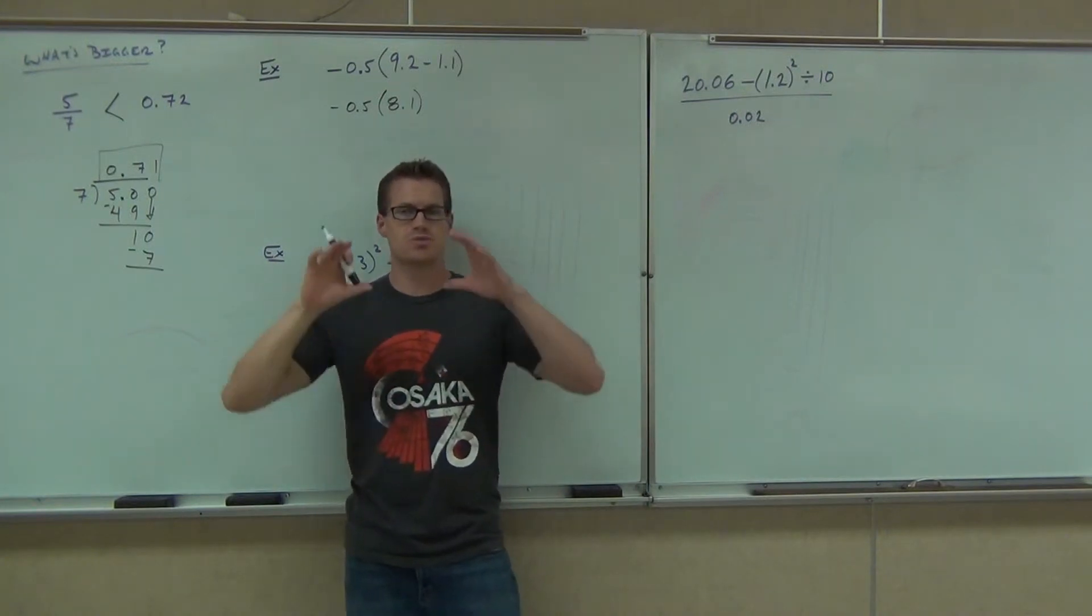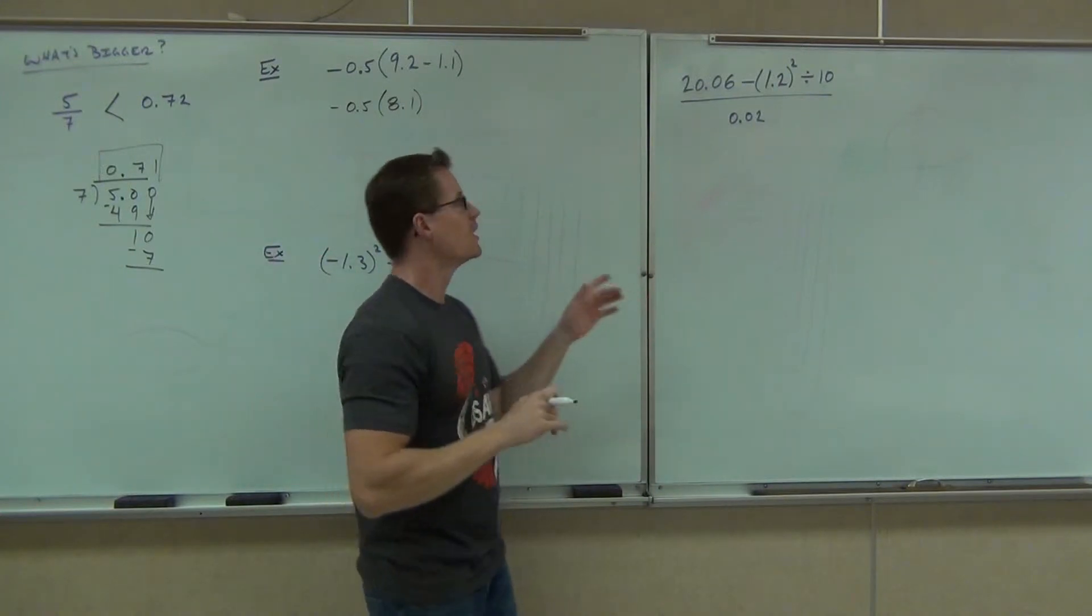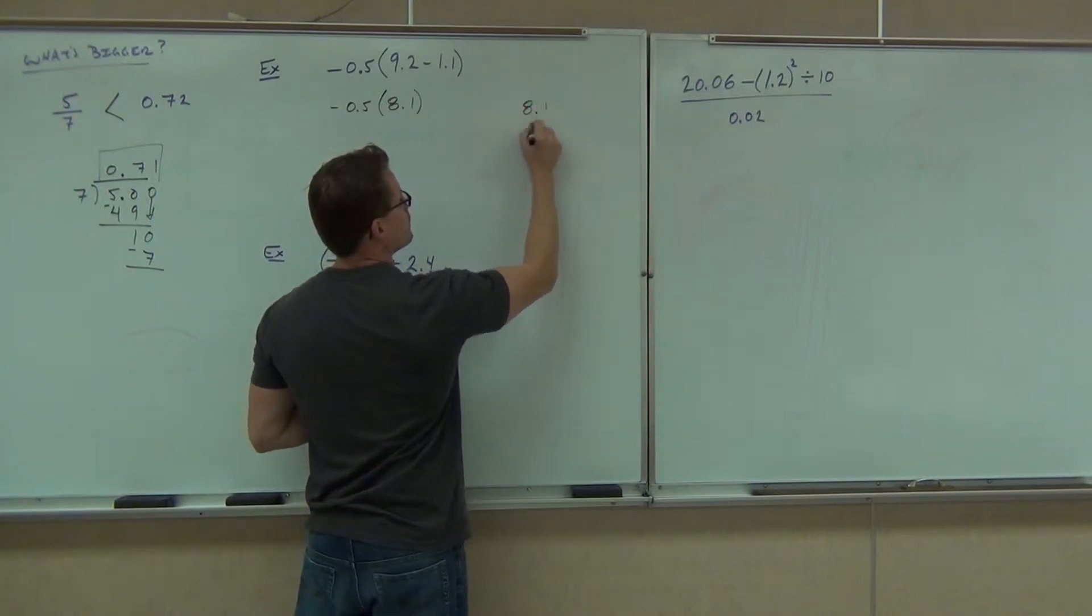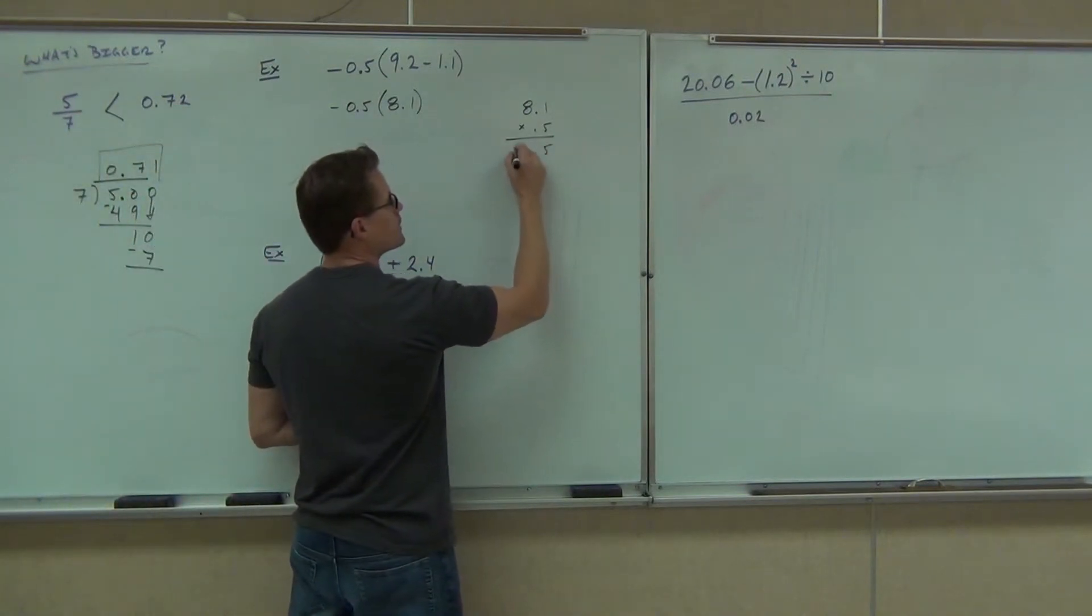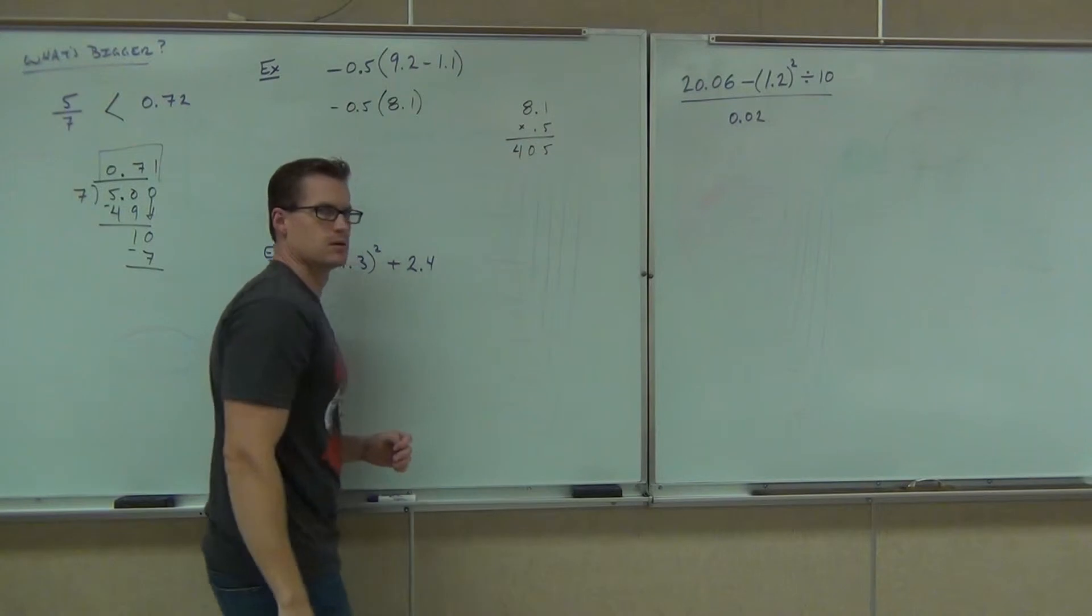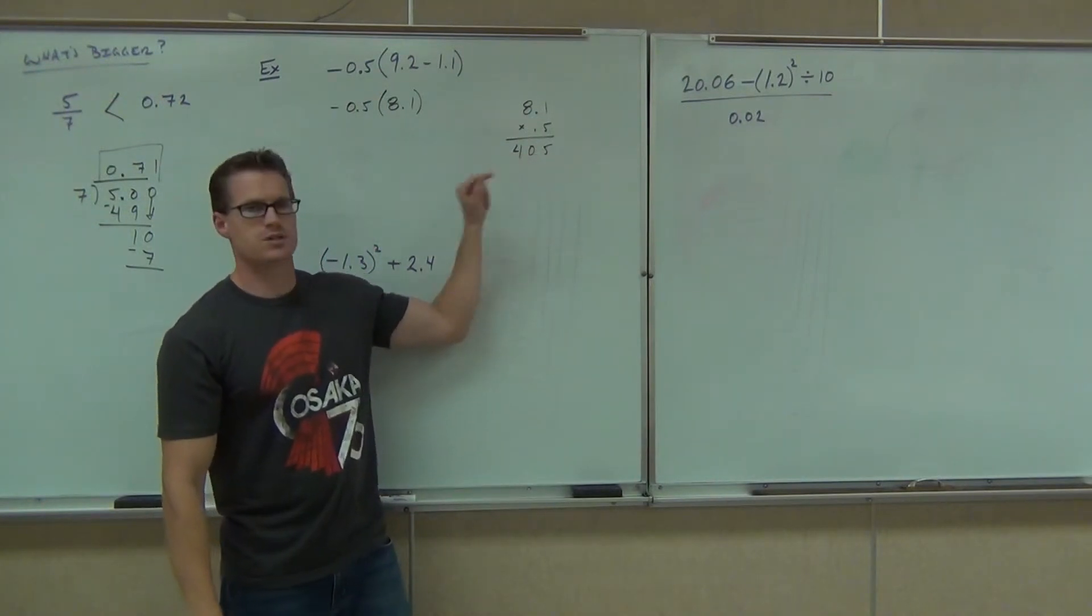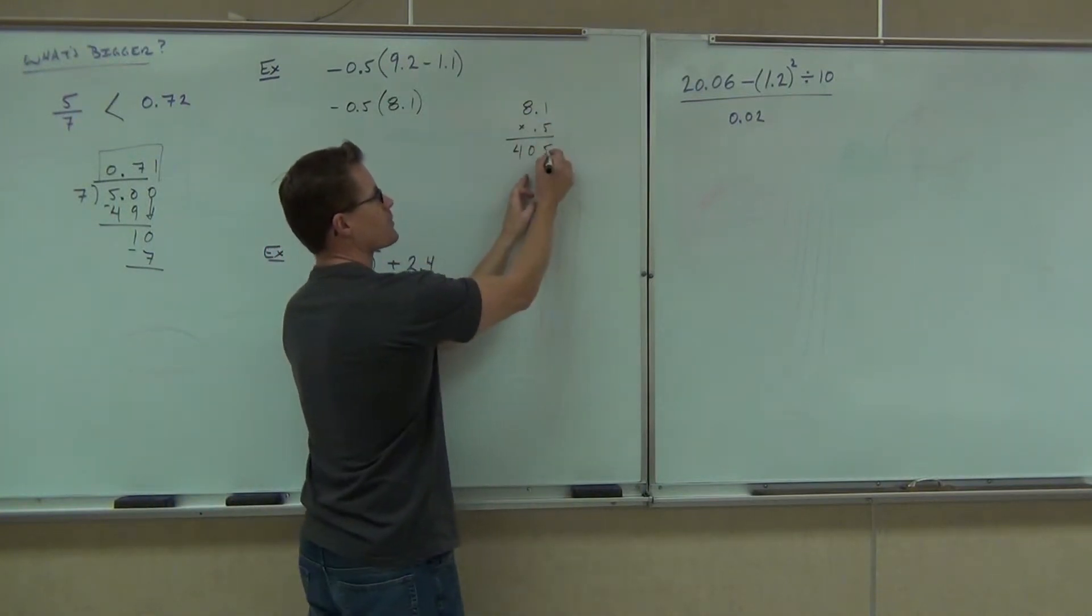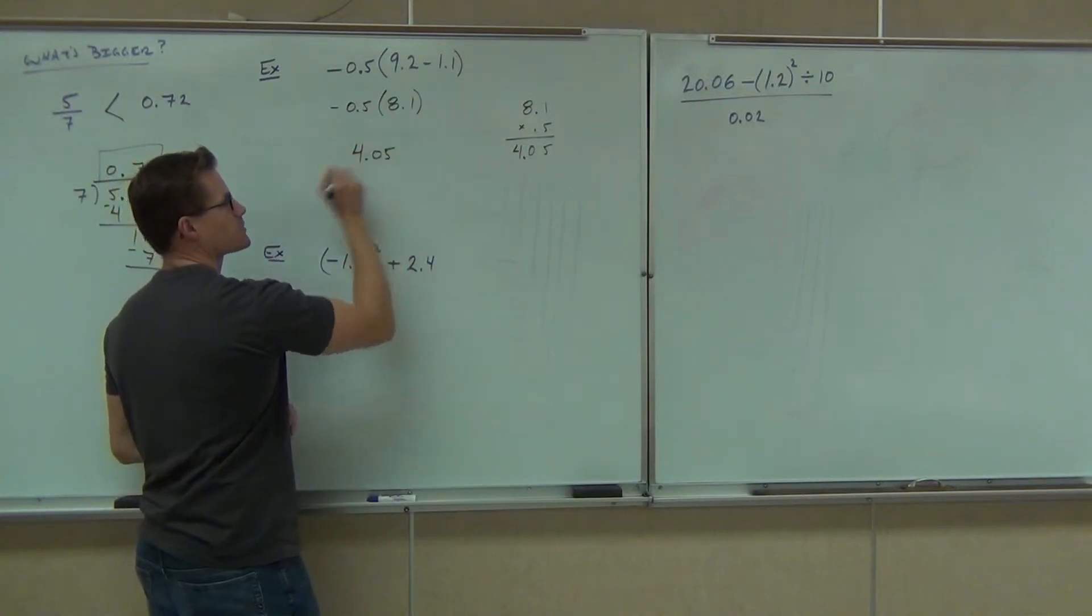Good, because that parentheses is really just holding that number in there. There's nothing in there. There's no exponents. The next thing we have is multiplication and division. So off to the side, we're going to multiply 8.1 times .5. If we multiply 8.1 times .5, we get 5. We get 40. Hey, where does that decimal go? Does it go between the 0 and the 5 or the 4 and the 0? 4 and 0. Very good. Because we have two decimal places from the right, that's 4.05.